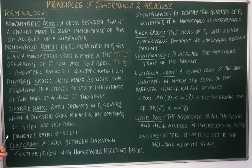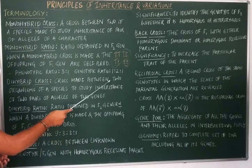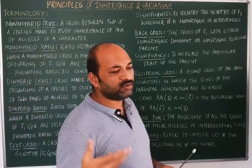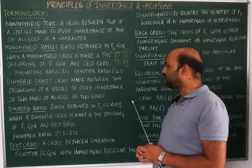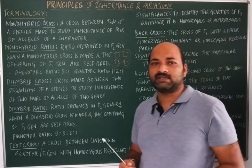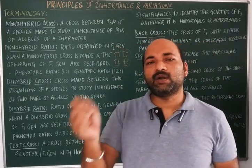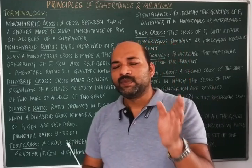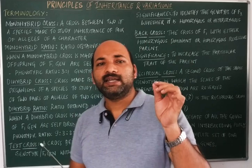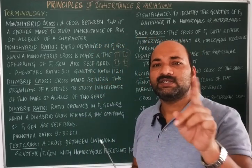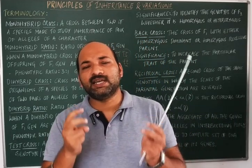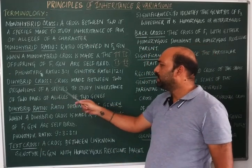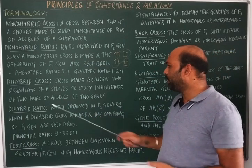Next is dihybrid cross. A dihybrid cross is a cross made between two organisms of the same species to study the inheritance of two pairs of alleles, or two genes. In a dihybrid cross, we select two characters — for example, round yellow seeds crossed with wrinkled green seeds. Round is the shape, yellow is the color — two characters are involved.